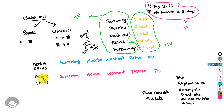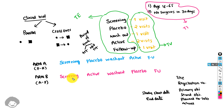For subjects in arm B, who take active first and then placebo, the sequence is: screening, active medication, washout, placebo, and then follow-up. So the order of elements has changed between the two arms.